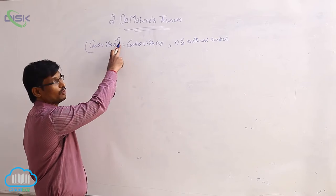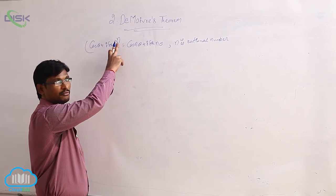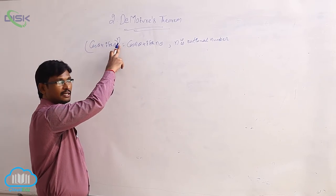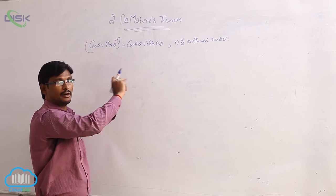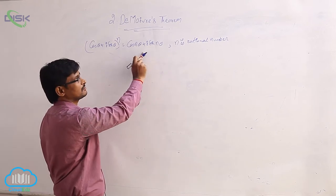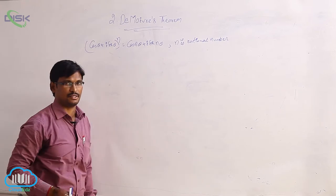Cos theta plus i sin theta to the whole power n — if n is a natural number or a rational number, this formula also satisfies De Moivre's theorem.